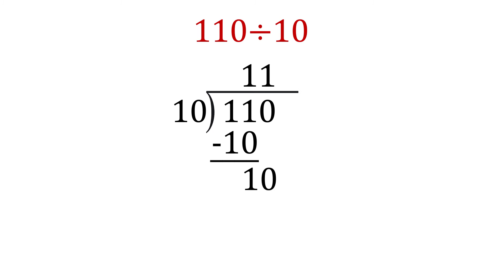Just use long division. So let's do 110 divided by 10. 10 goes into 11 one time. 1 times 10 is 10. 11 minus 10 is 1. Drop the 0. 10 goes into 10 one time. 1 times 10 is 10. 10 minus 10 is 0. And we're done. 110 divided by 10 is 11.